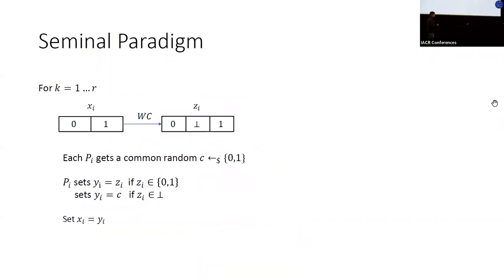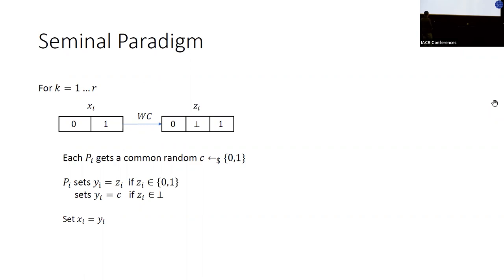Weak consensus can be achieved in a constant number of rounds, even deterministically. This paradigm then bootstraps from weak consensus to full Byzantine agreement via a common coin. First we run weak consensus — each party obtains one of the three values zero, one, or bottom — then we flip a common coin, which for this talk is a completely uniform random value between zero and one that everyone receives.